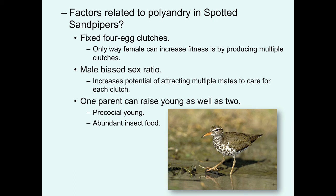This leads to females gaining more fitness via quantity than males — everything is reversed from typical expectations. Normally females seek quality and males seek quantity; here males are highly selective, choosing the highest quality female since they're limited in young they can produce, while females try to collect as many males as possible to lay multiple clutches. Factors favoring polyandry in spotted sandpipers include fixed four-egg clutches — common in the order Charadriiformes — a male-biased sex ratio, and precocial young that only require uniparental care, relaxing the link between monogamy and biparental care.